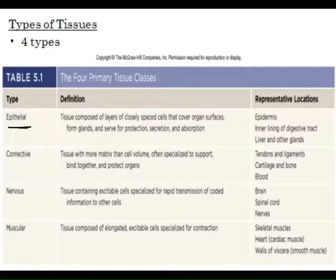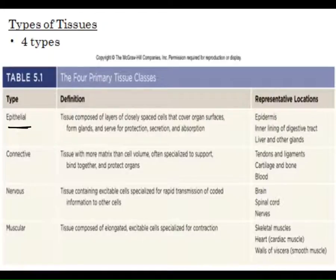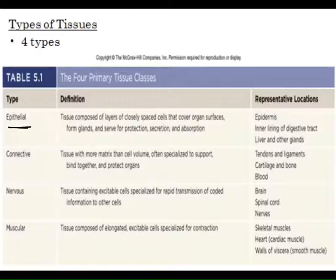Epithelial tissues are found outside of the body, lining the outer layer — our epidermis is epithelial. This tissue is also found lining our tubes: blood vessels, the gut, cavities of the body. It also covers organs — the visceral pericardium, visceral pleura, parietal layers are all epithelial layers, very thin but lining cavities and shrink-wrapping organs. Glands are largely epithelial too: liver, pancreas, salivary gland, thyroid gland are primarily epithelial in nature.